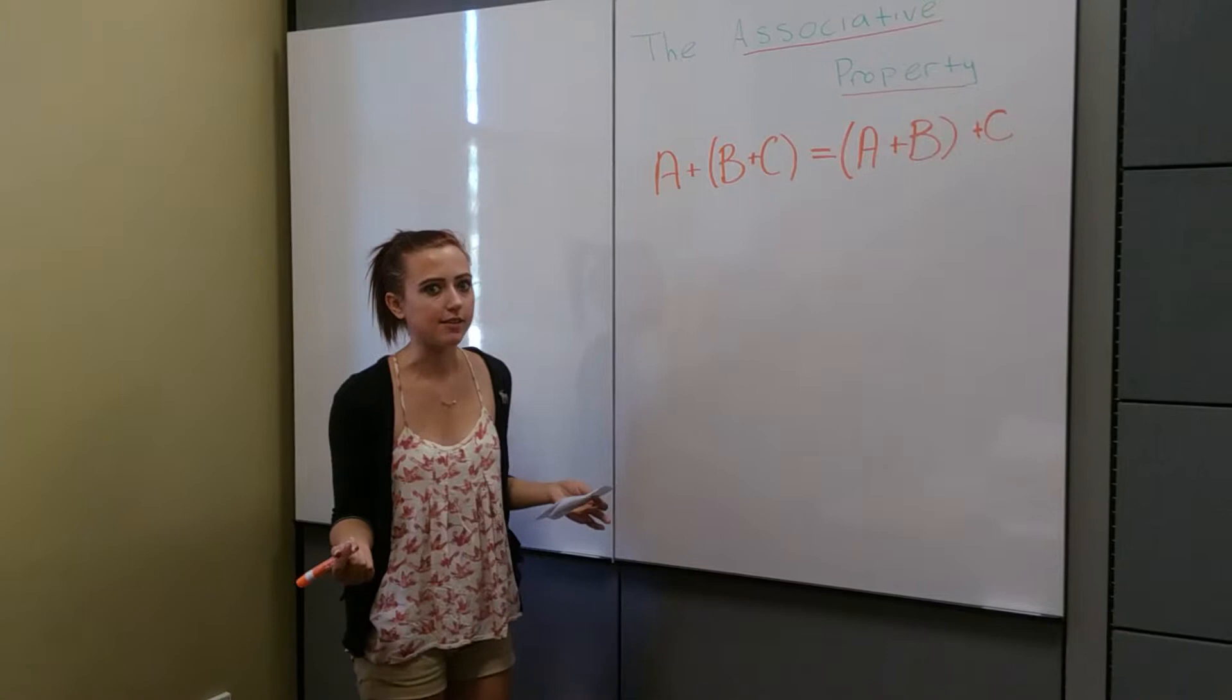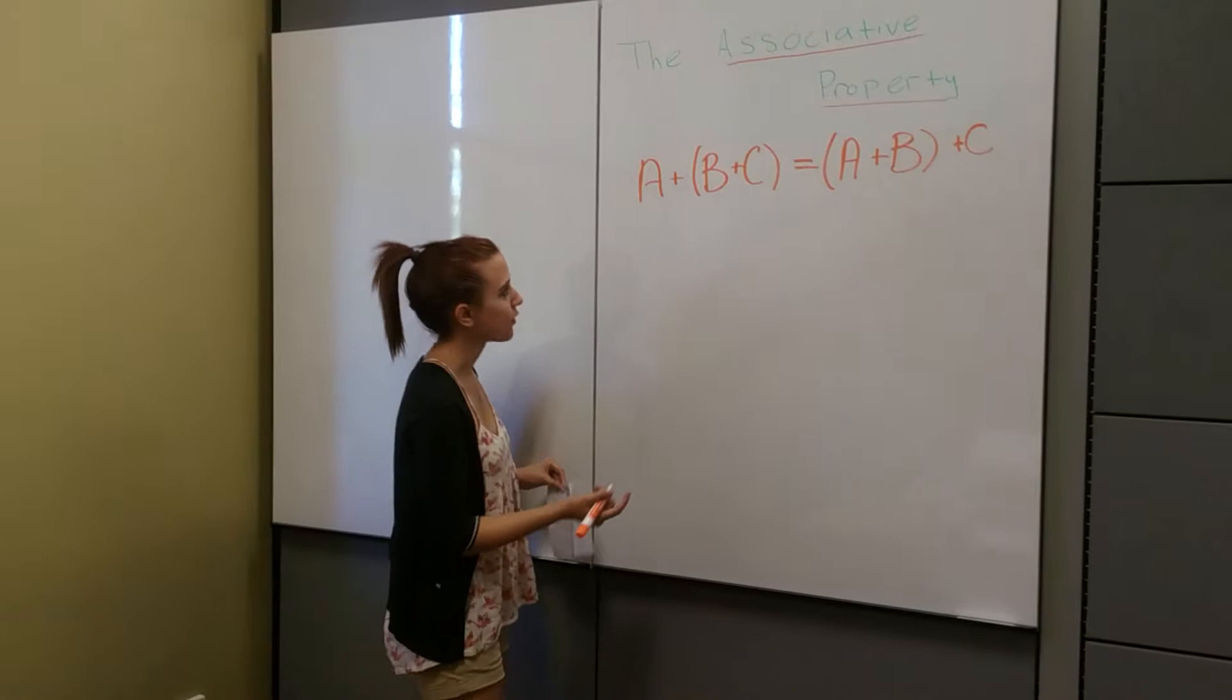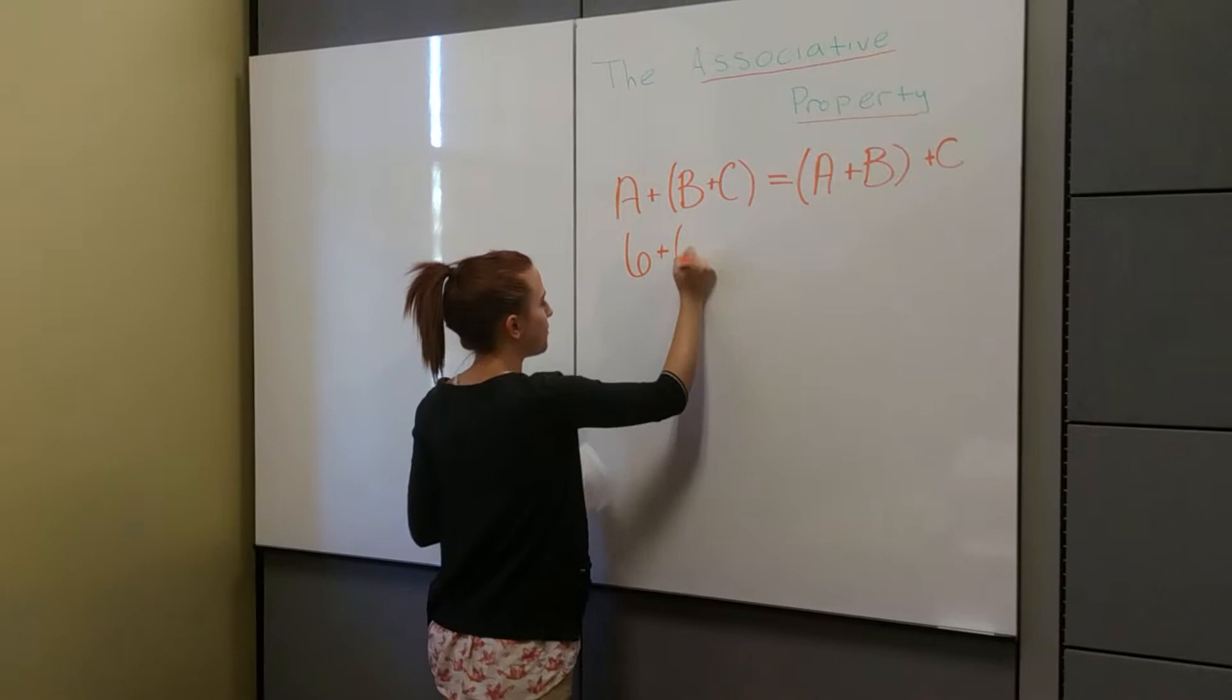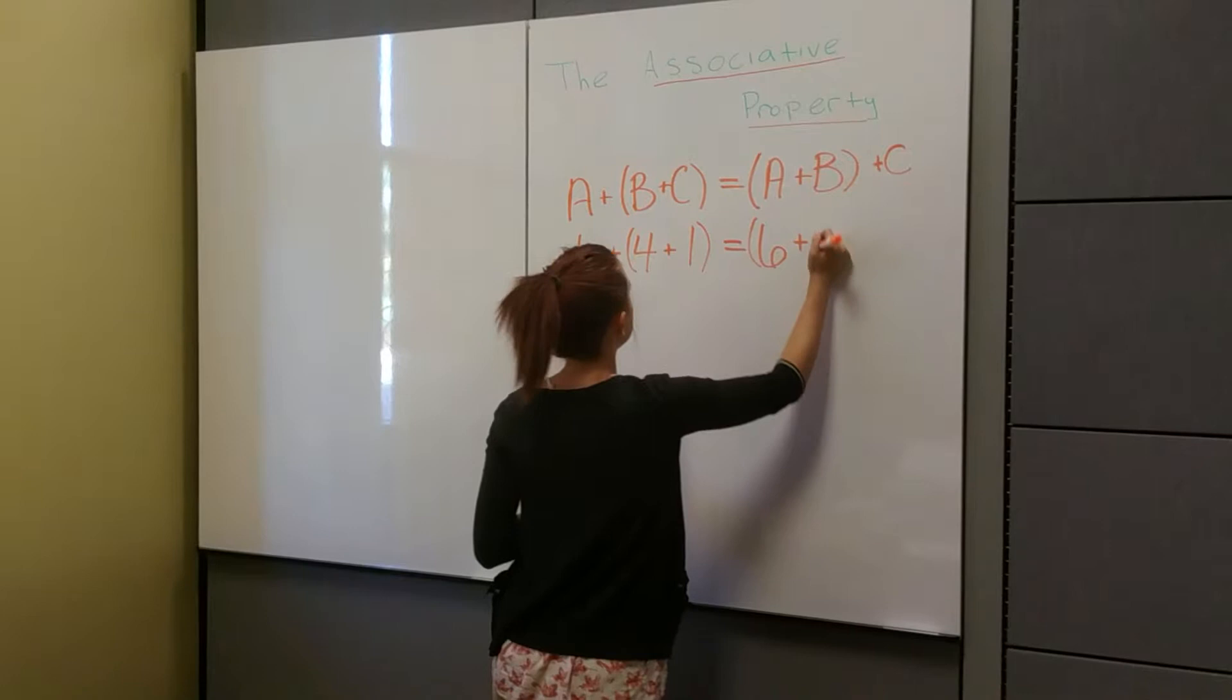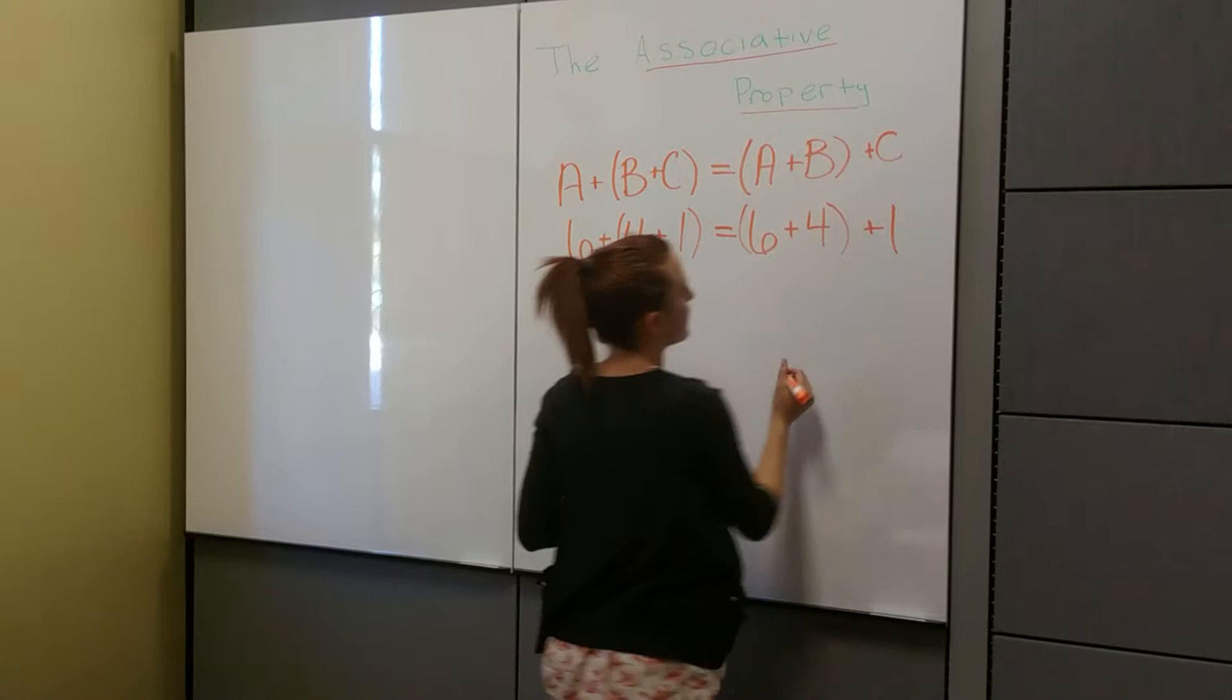So we can illustrate this by putting in numbers for the letters. So for this first example, I'll use 6 for our A, and then for B, I'll use 4, and for C, I'll use 1. And so on this side, we'll write that out again with our A as 6, plus our B, which is 4, then close parentheses, and on the end, plus C, so plus 1.